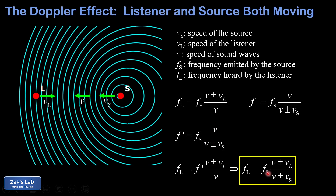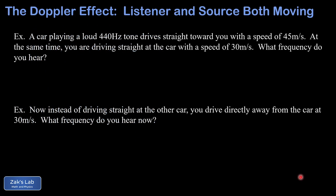The general Doppler shift formula gives the frequency heard by the listener as the source frequency multiplied by a fraction: in the numerator, the speed of sound plus or minus the speed of the listener; in the denominator, the speed of sound plus or minus the speed of the source. The signs must be chosen so the correct qualitative behavior results. If the listener is moving toward the source, choose plus in the numerator to increase frequency. If the source is moving toward us, choose minus in the denominator to increase frequency. If the source is moving away, choose plus in the denominator to reduce frequency.